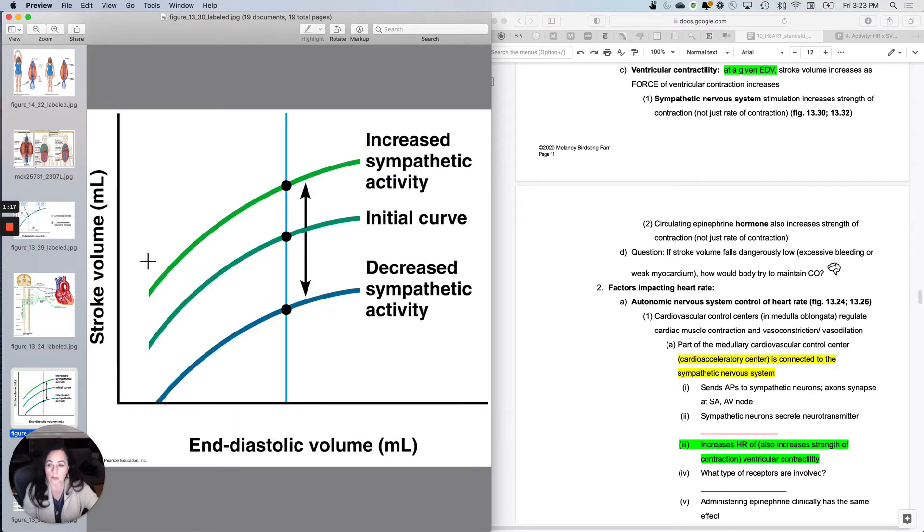So ventricular contractility says at a given EDV, I'm not changing it, stroke volume increases as you increase the force of ventricular contraction. And the way that you do that is with the sympathetic nervous system.